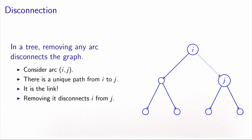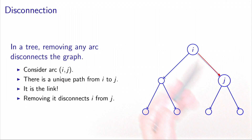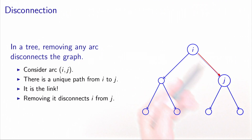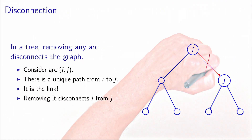We also know that a tree is connected. And the next property says that it just takes one arc removal to disconnect the graph. Consider one arc i, j in the tree. We know from a previous property that there is exactly one path connecting i and j — it's the link itself. This is the only path that connects i and j. Therefore, if we remove that link, we disconnect the graph because there will be no path anymore between i and j. This proves the property.